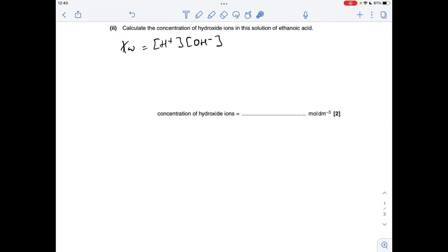And for the last part, we've got to calculate the concentration of hydroxide ions in this solution of ethanoic acid. So we need to bring in the KW expression, which I've got there. Now, annoyingly, they have not quoted the temperature, so I'm going to assume it's 25 degrees C, which will give KW a value of 1 times 10 to the minus 14.